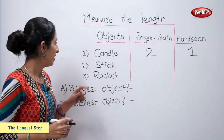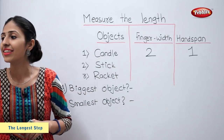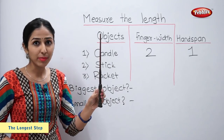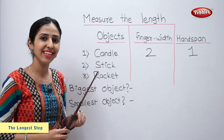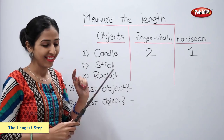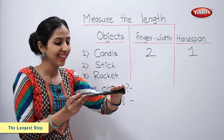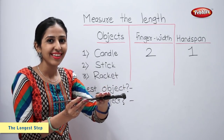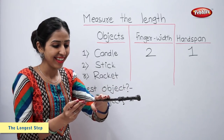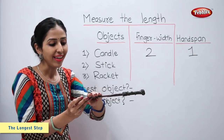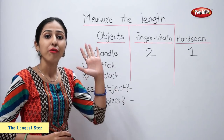Let us measure the stick. Let us measure the length of this stick using handspan and finger width. First, with finger width. One, two, three, four and five — five finger width.